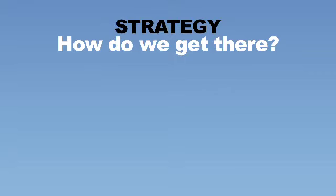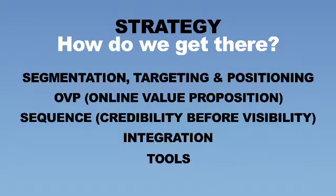Objectives — where are we going. Next up is Strategy — how do we get there. This is probably the most difficult part of any marketing plan. We use a thing called STOP and SIT, which is segmentation, targeting and positioning. Included with that are objectives and online value propositions, sequence of events such as credibility before visibility, integration of everything, the consistent online value proposition, and which tools or tactics we're going to use. Combine all those together and you've got the bones of a good strategy.